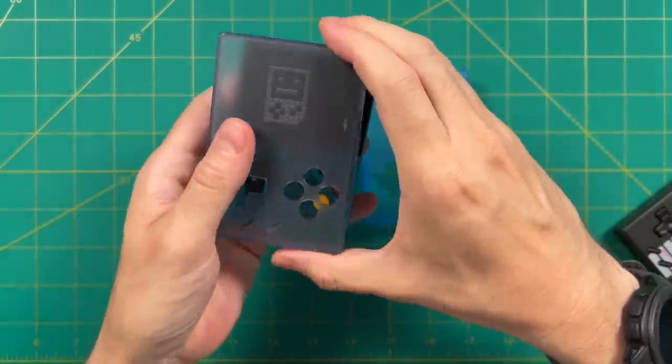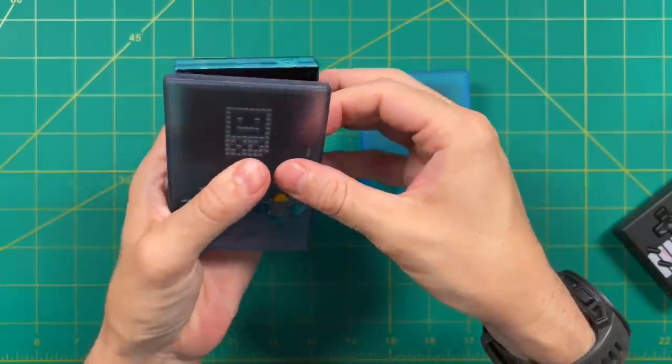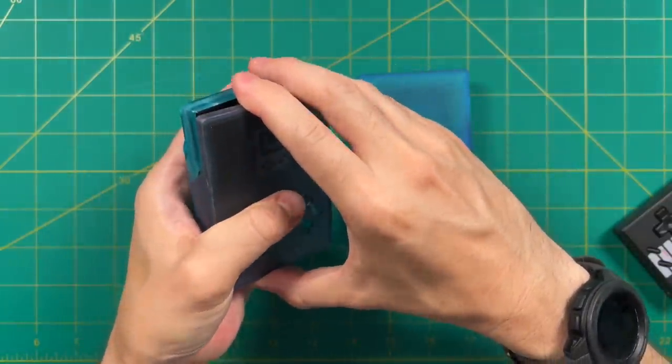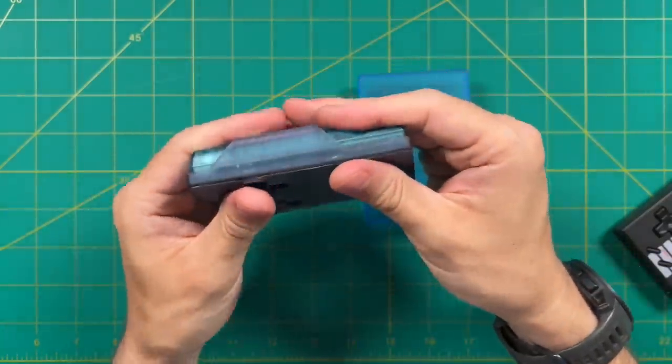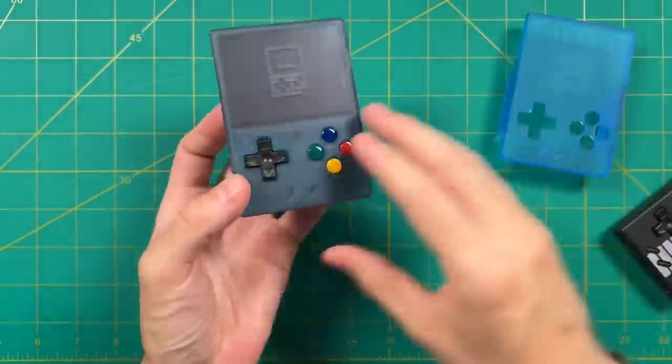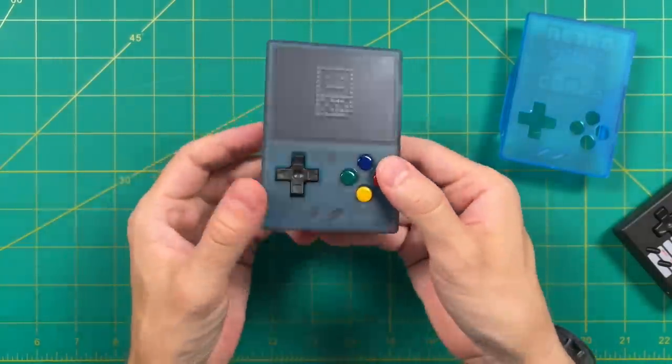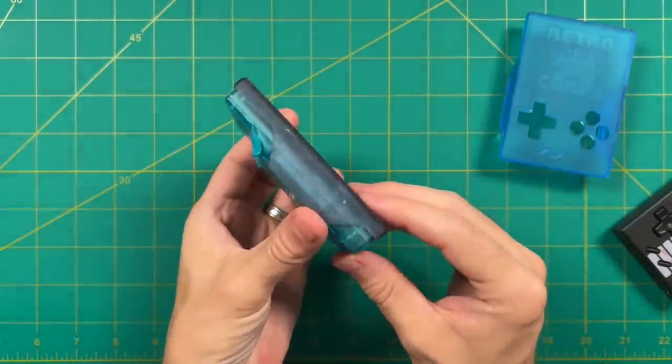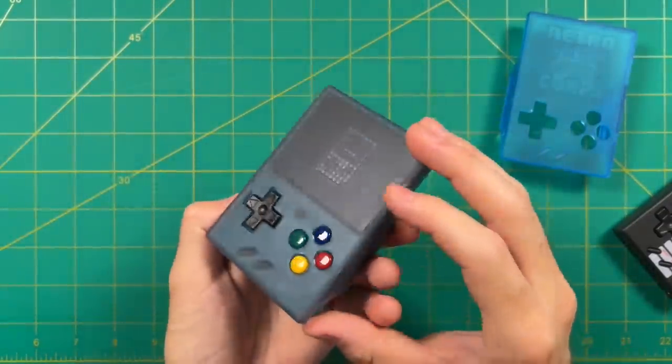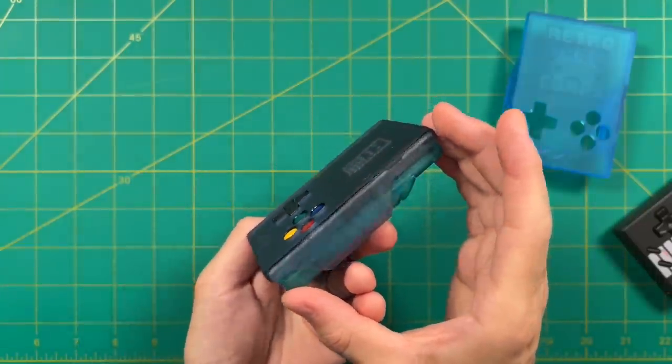So essentially, the idea here is that you would slip this on before you put it in your pocket, just to make sure the screen doesn't get scratched up or cracked while you're walking around. And so yeah, I think in that regard, it does a great job. The screen is protected, as you can see, and it also prevents the buttons from sticking out. So you're not going to accidentally press any of the buttons while it's jostling around within your pocket.